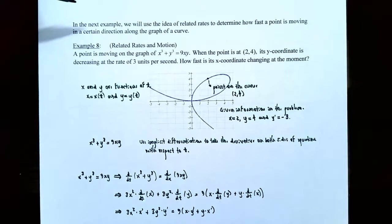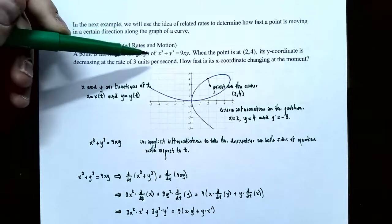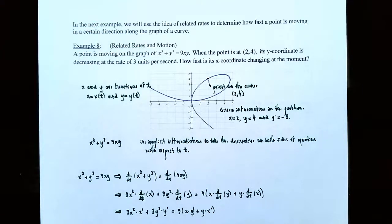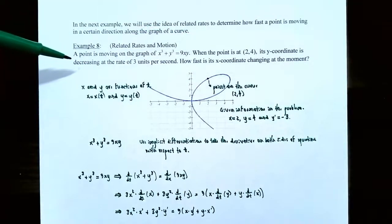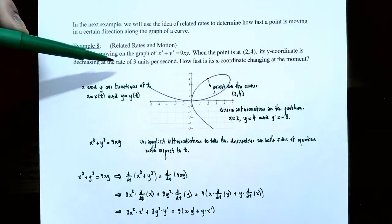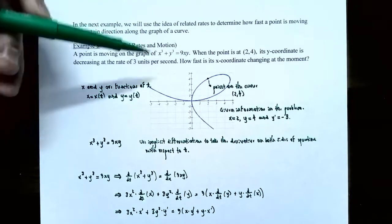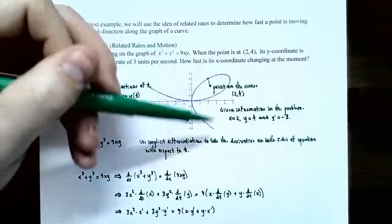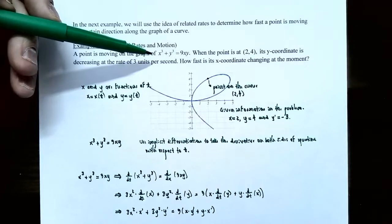In the next example, we use related rates to determine how fast a point is moving along the graph of a curve, where both the x coordinate and y coordinate are functions of time. Example 8: a point is moving on the graph of x cubed plus y cubed equals 9xy. When the point is at (2, 4), the y coordinate is decreasing at a rate of 3 units per second. How fast is the x coordinate changing at this moment?